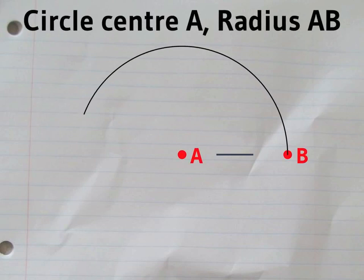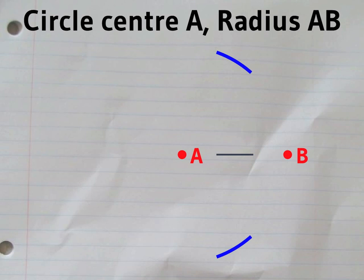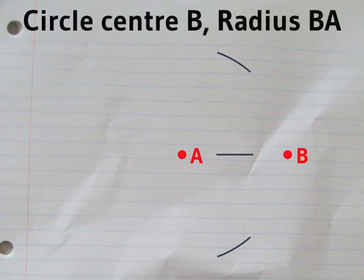Now draw the circle with radius AB centred on A. Then draw another circle with the same radius, but this time with centre B.